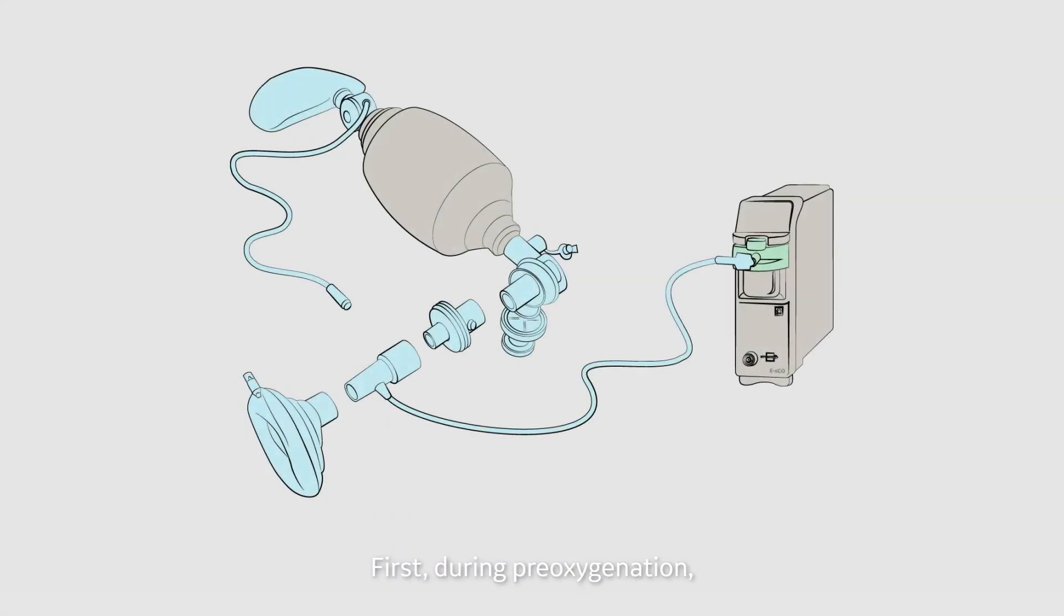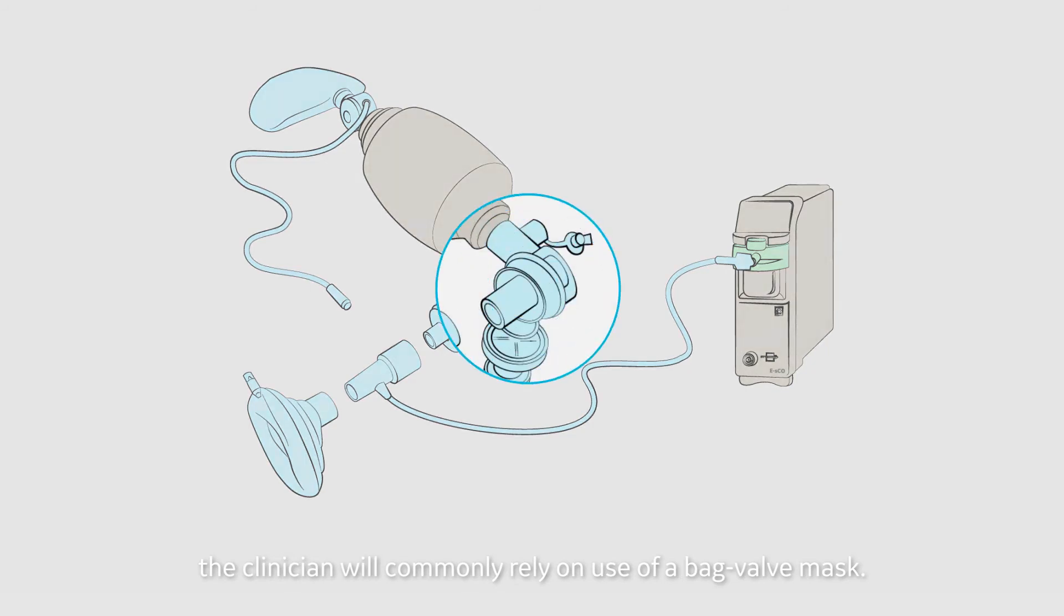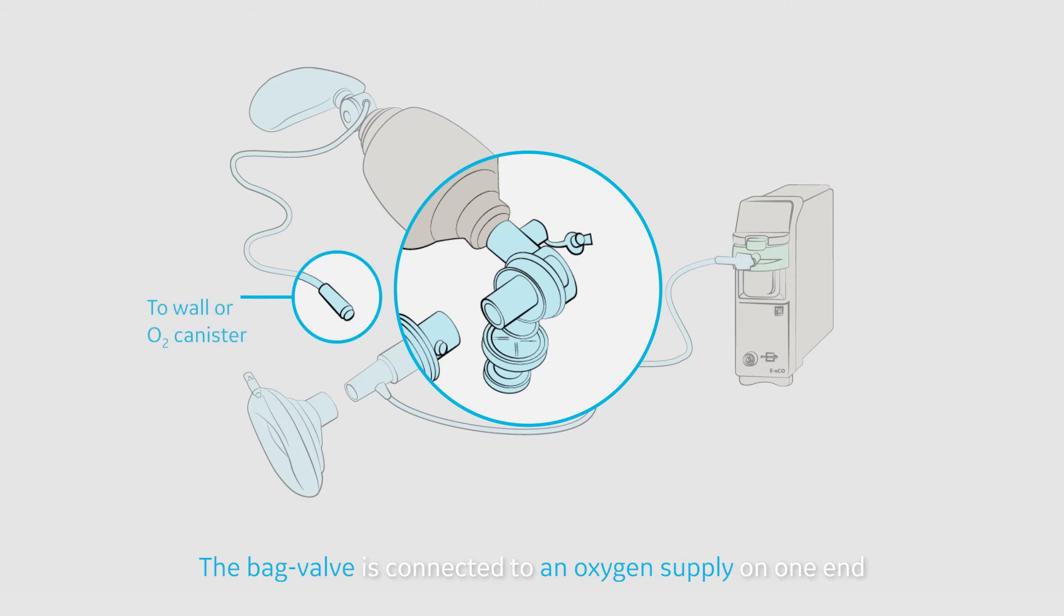First, during pre-oxygenation, the clinician will commonly rely on use of a bag valve mask. The bag valve is connected to an oxygen supply on one end and at the patient end several devices are connected in series in order to complete the breathing circuit.